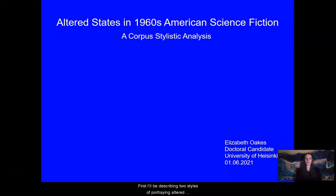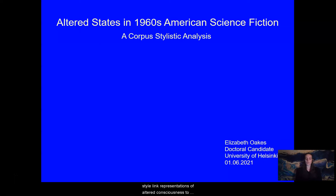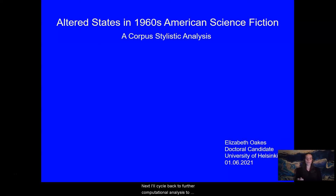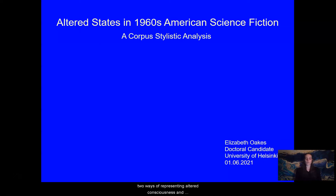First, I'll describe two styles of portraying altered states that an initial computational analysis uncovered in a corpus of science fiction novels. Then, I'll discuss particularly how lexical aspects of each style link representations of altered consciousness to themes of void and chaos on one hand, and self-knowledge and interpersonal connection on the other. Next, I'll cycle back to further computational analysis to explore relationships between novels based on the categories of words discussed in the stylistic analysis. And finally, I'll explore some connections between these two ways of representing altered consciousness and contemporary cultural shifts regarding altered states.